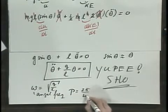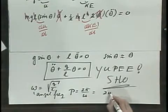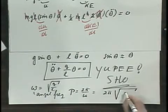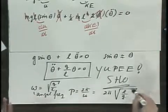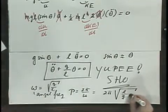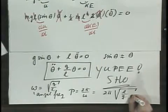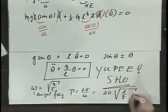The period of oscillation, which is two pi divided by the angular frequency, equals two pi times the square root of L over G. And this is, of course, no surprise — this is a very familiar result. So you see that you can also derive the period of a simple pendulum using the conservation of mechanical energy. Whichever method you prefer, it's up to you.